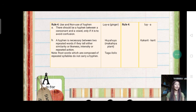Okay, the rule number four. Use and non-use of hyphen. There should be a hyphen between a consonant and a vowel only if it is to avoid confusion.